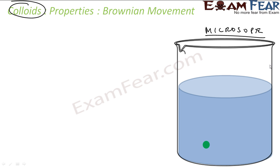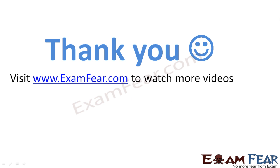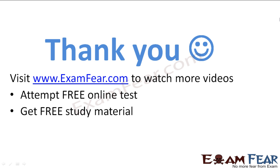Brownian movement has a stirring effect, and this is the reason why colloids are stable — the colloidal particles don't coagulate and settle down. Because of the constant collision between the colloidal particles and the molecules of the dispersion medium, the particles keep moving and never settle. So Brownian movement is the reason for the stability of colloids. Visit examphia.com to watch more videos, attempt free online tests, get study materials, find tutors and mentors, and much more.